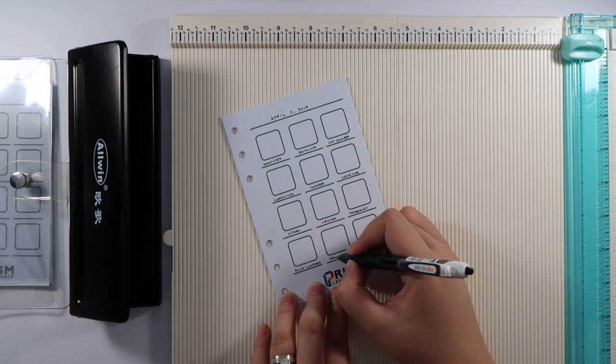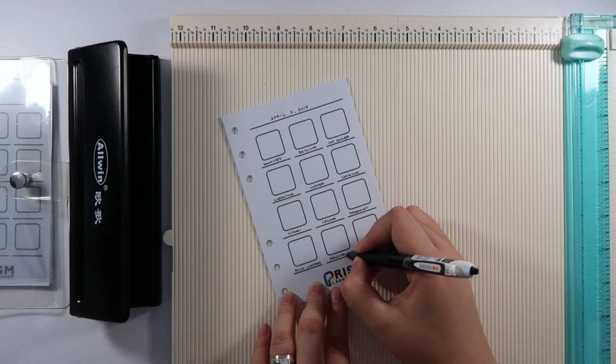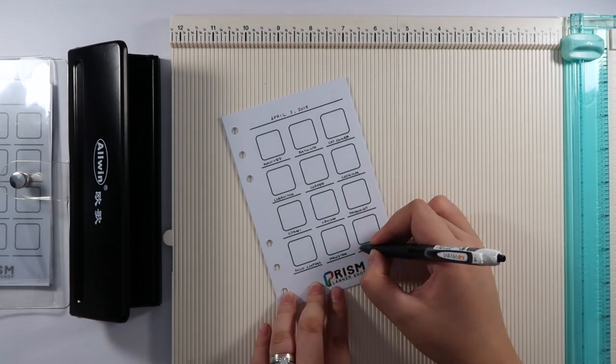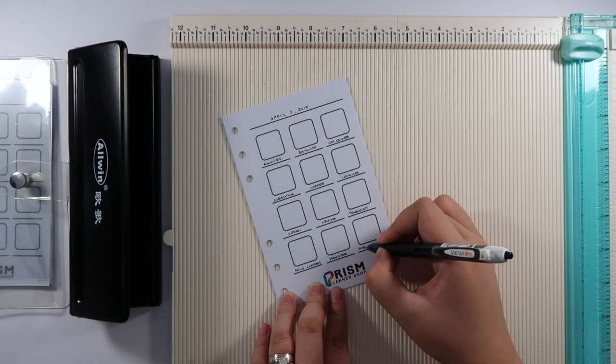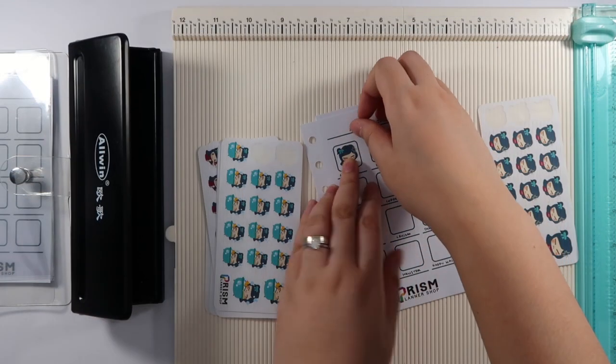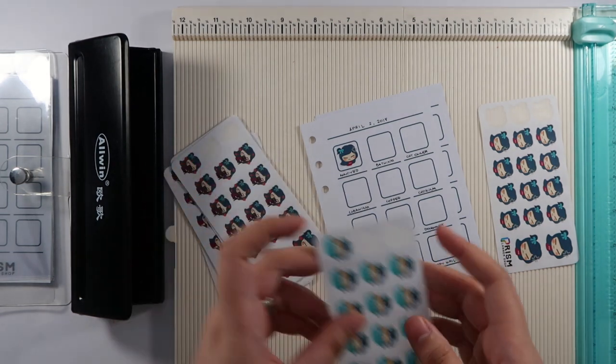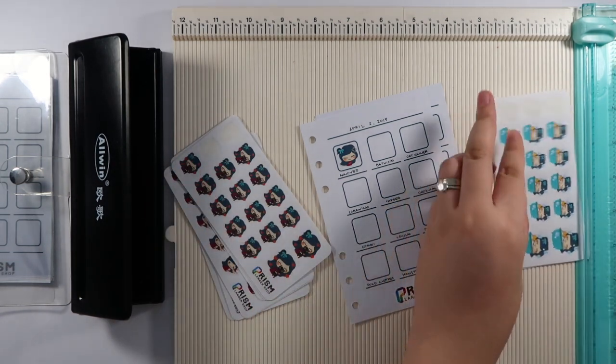Besides, these dividers also track which stickers you have in your collection so that it's easier for you to find them when you need them. I just use a sticker from each sheet and put them inside the box corresponding with the label.